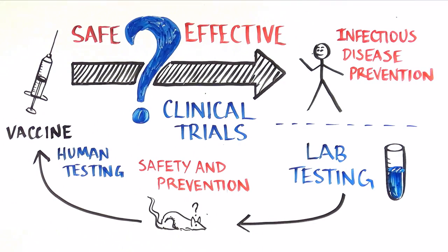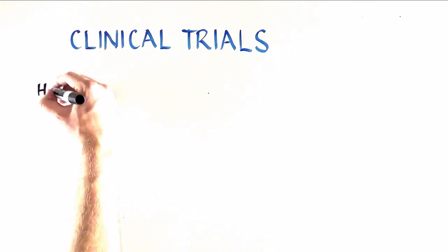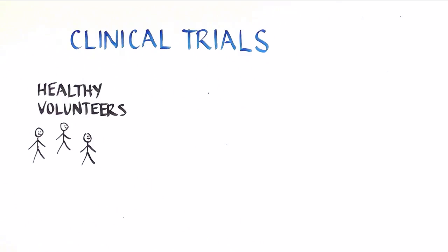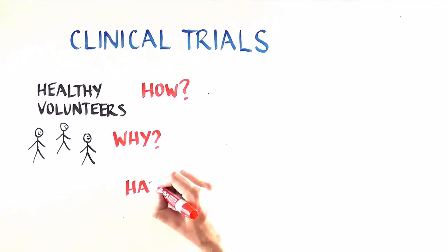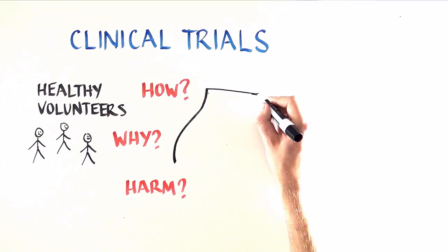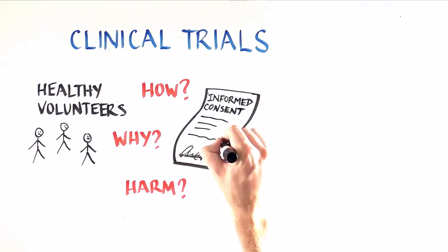Because we don't know whether or not the vaccine will work, we begin a very structured set of studies called clinical trials. These studies involve healthy volunteers who are told in detail about how and why this vaccine is being tested, and about any potential harm. This educational process is called informed consent, and goes on before and during the trial.